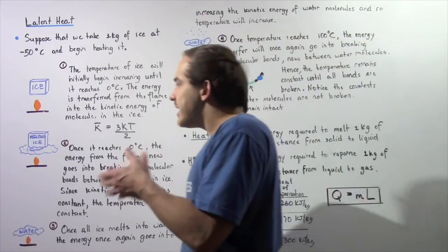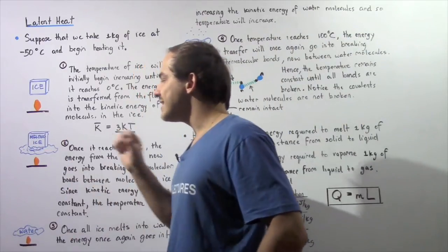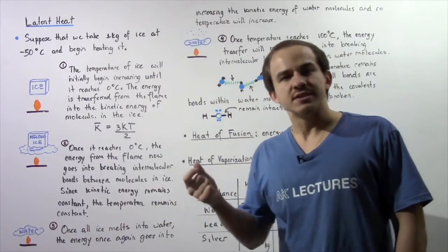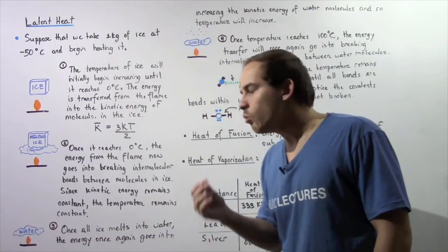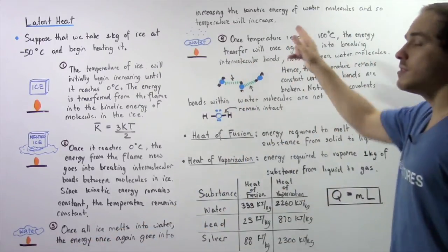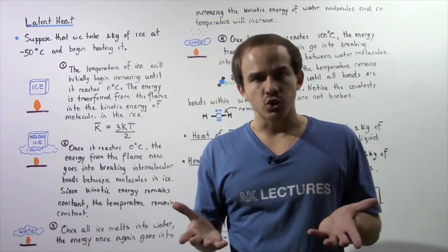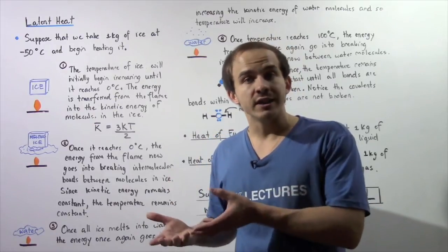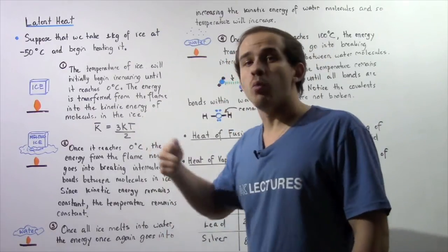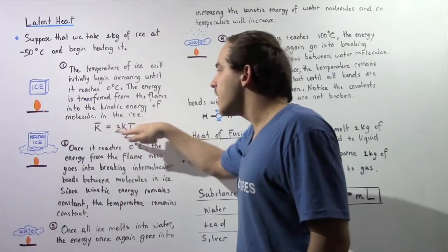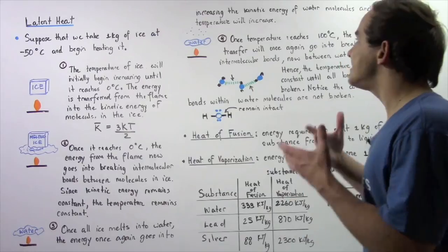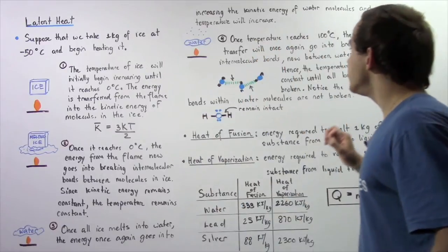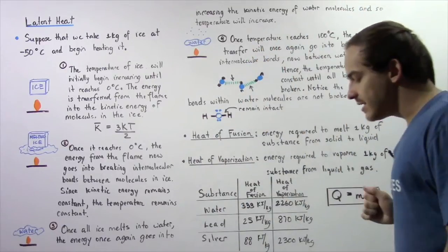Let's suppose that we have melted all the ice into liquid water — what takes place next? Once all the ice melts into liquid water, the energy will once again go into increasing the kinetic energy of the water molecules. The water molecules will vibrate and move more quickly, and that means the temperature will once again increase. This will continue until it reaches a temperature of 100 degrees Celsius.